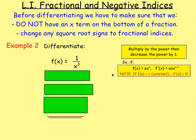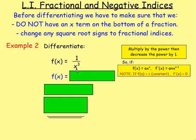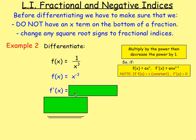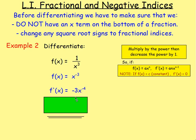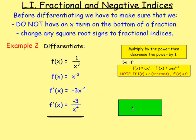Example number 2: differentiate f(x) = 1 over x cubed. You cannot differentiate that straight away because you've got x on the bottom of a fraction. So you have to rewrite it — don't write f'(x) yet because we're not differentiating straight away. Move x cubed up to the top line, so you end up with x to the power of negative 3. After that, you can differentiate: f'(x) equals negative 3 times 1 is negative 3, and take one off the power gives you x to the power of negative 4. If asked for positive indices, move it to the bottom: negative 3 over x to the power of 4.